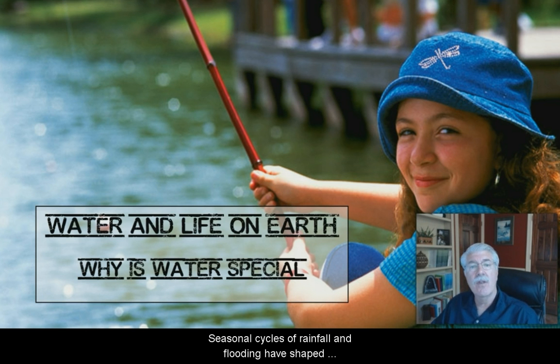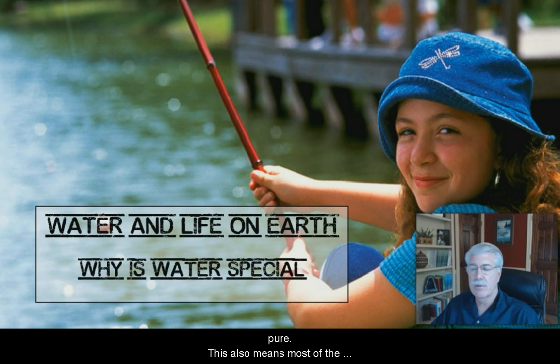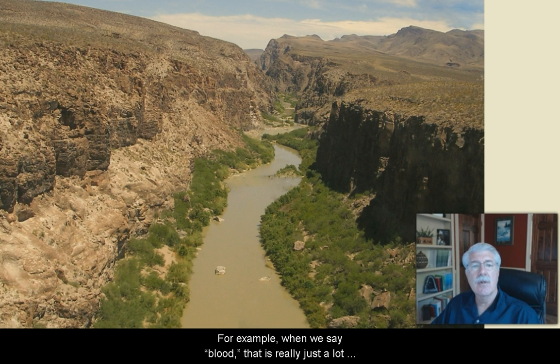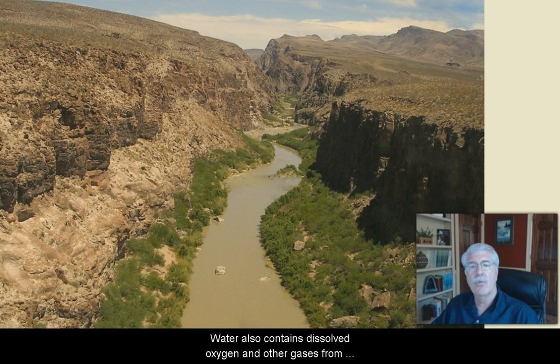Water is also called the universal solvent by chemists because it's very good at dissolving many different things. Seasonal cycles of rainfall and flooding have shaped many landscapes through what we call erosion. Because of these properties, water in nature is never completely pure. This also means most of the chemistry of life happens in solutions of water.